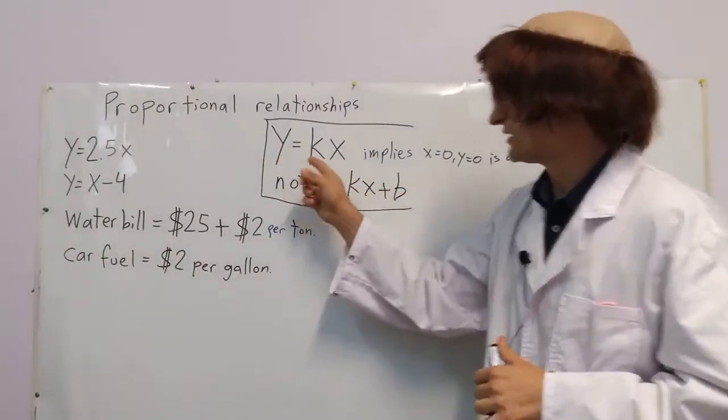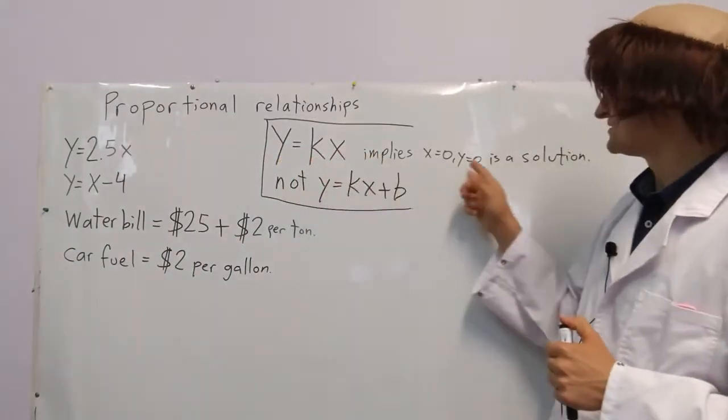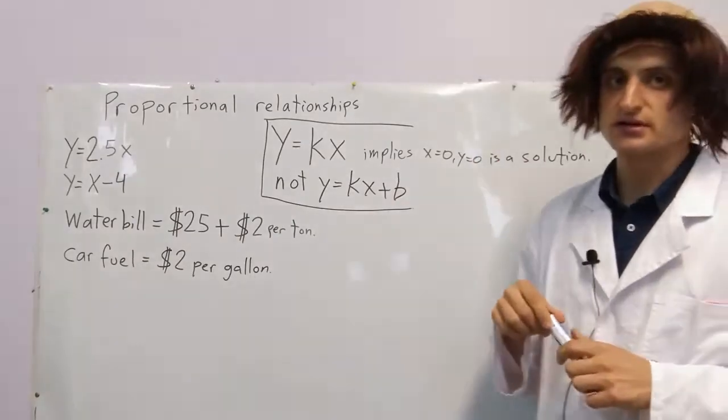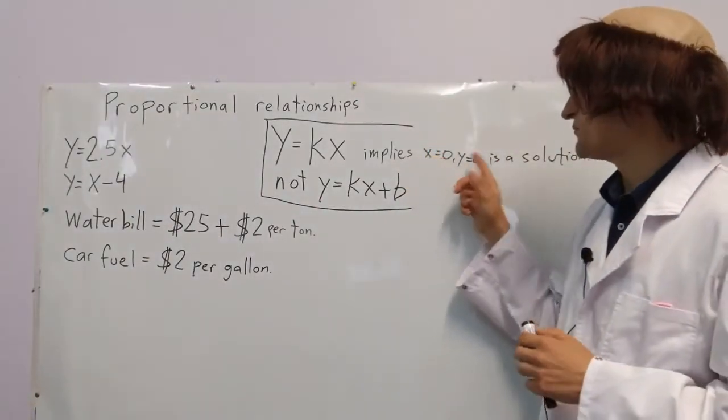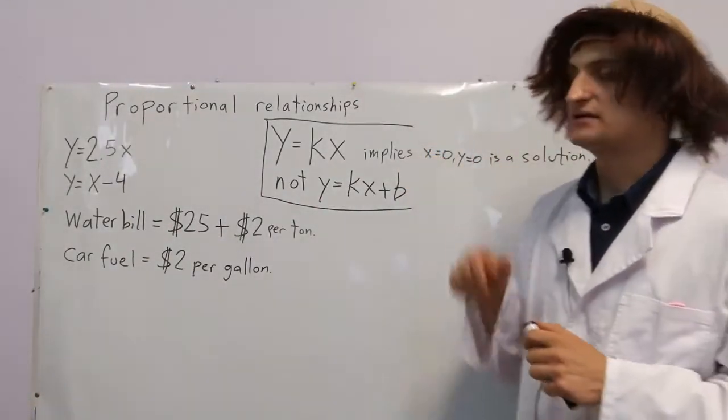And if you can write it this way, it means 0, 0 is a solution. That means x equals 0, y equals 0 is a solution.